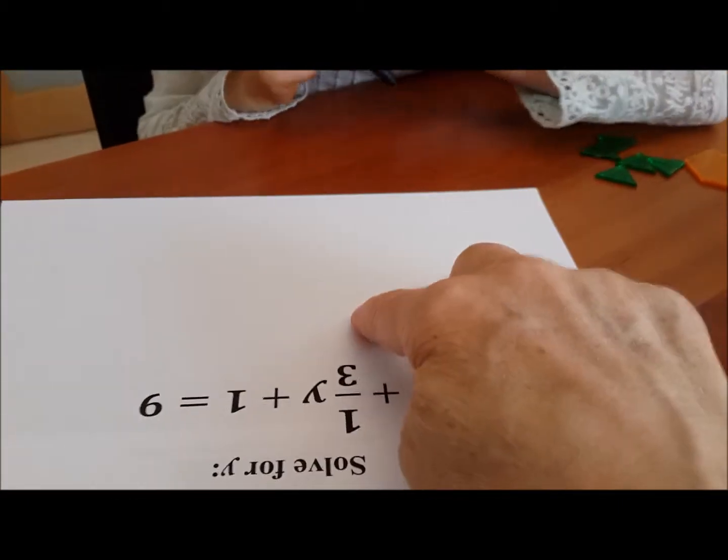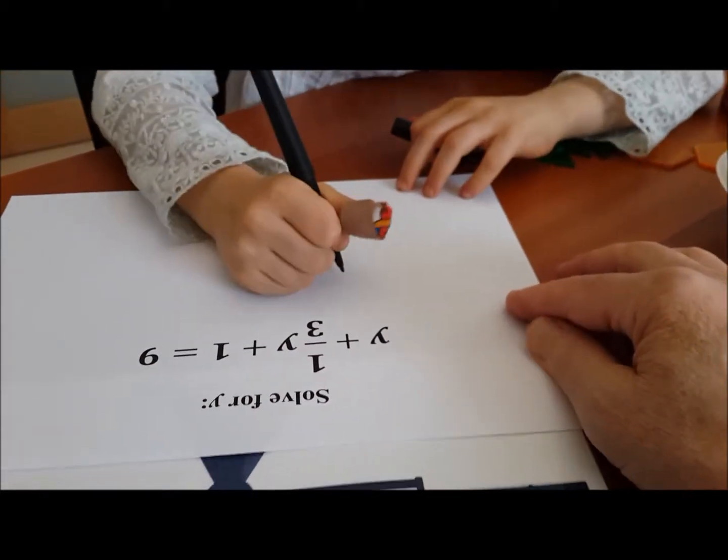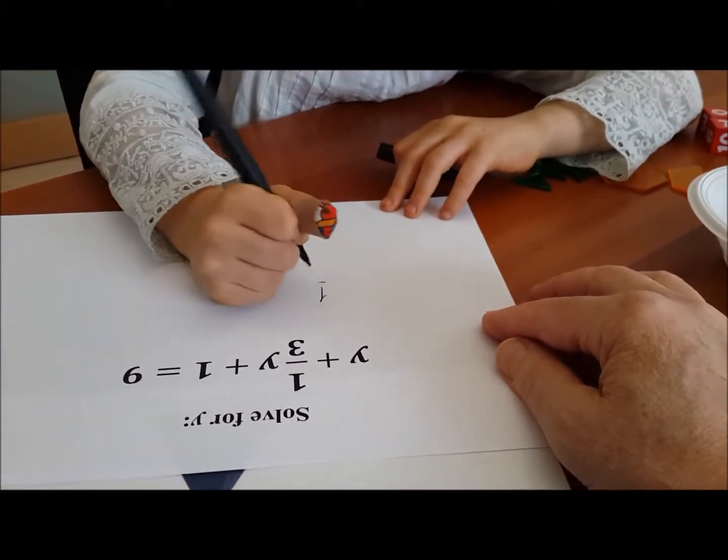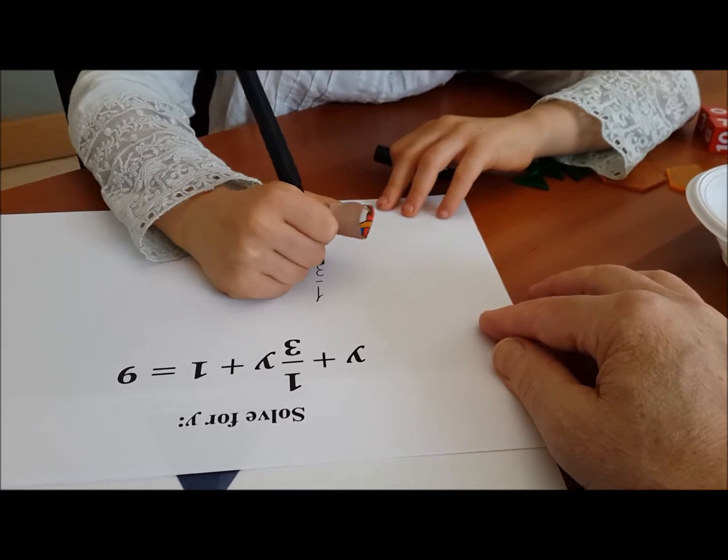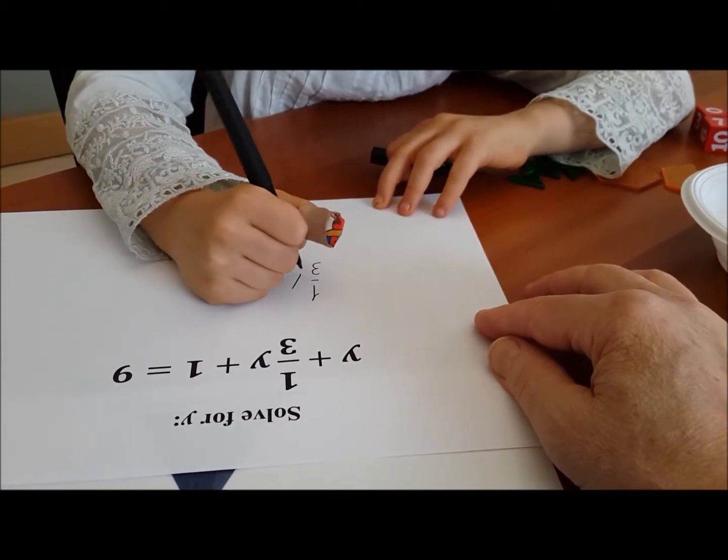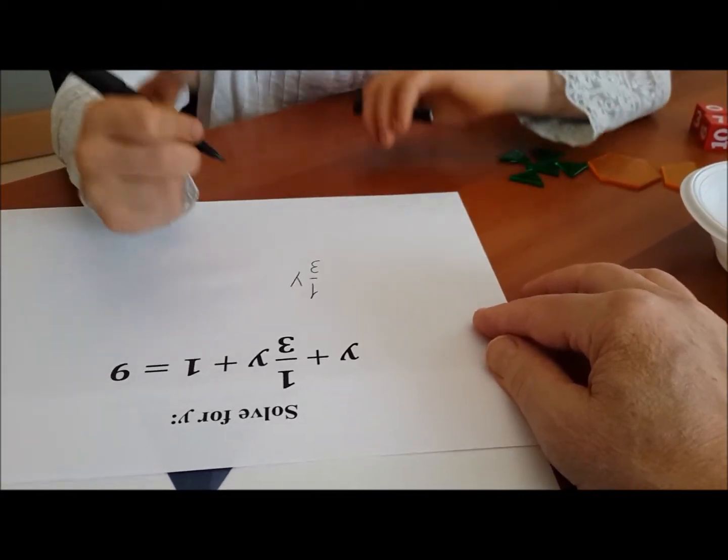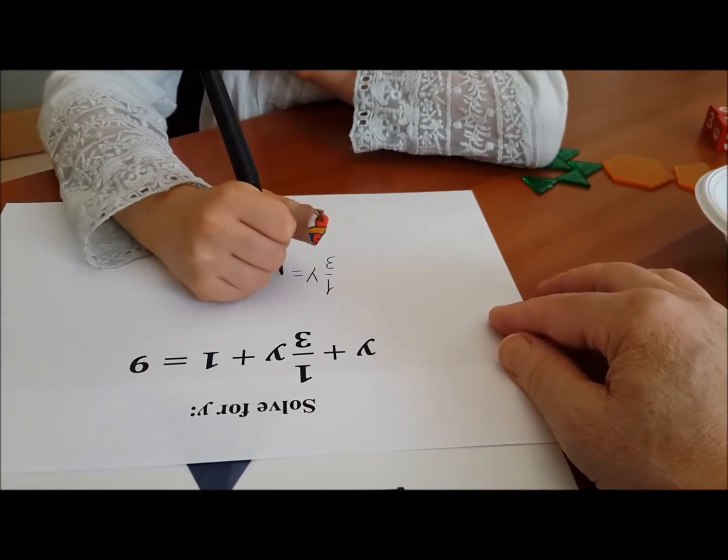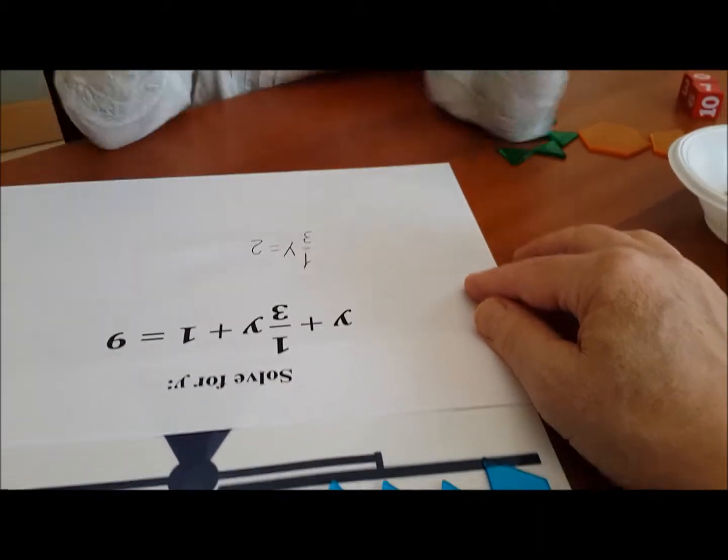Okay, would you please write one third of y equals two. Okay, because we just said the blue block is two.